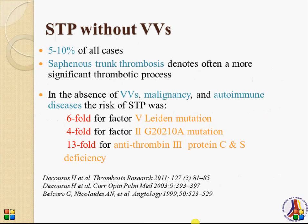Superficial thrombophlebitis may occur without the presence of varicose veins, though this is a minority — the incidence is about 5-10%. It appears that when the main trunk of the great saphenous vein is involved, this denotes a significant thrombotic process. In the absence of varicose veins, malignancy, or autoimmune disease, the possibility of an association with hematological deficiencies is quite common.